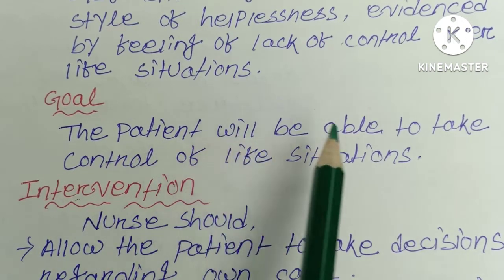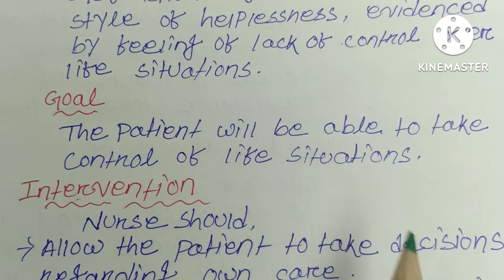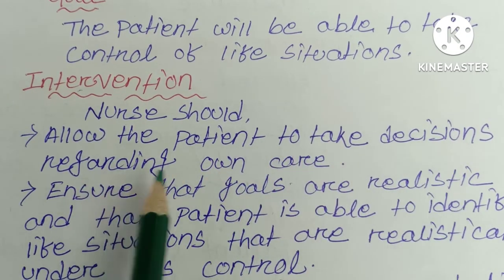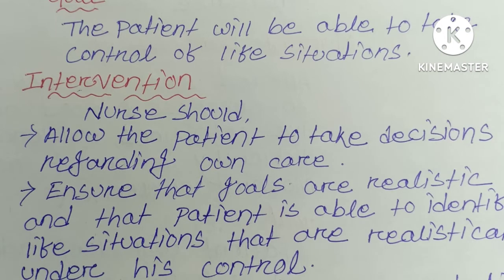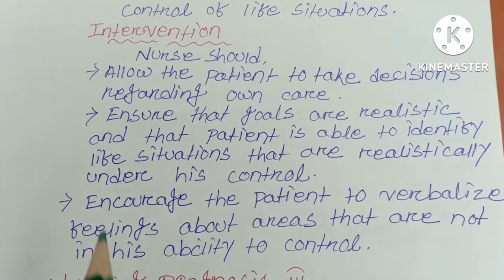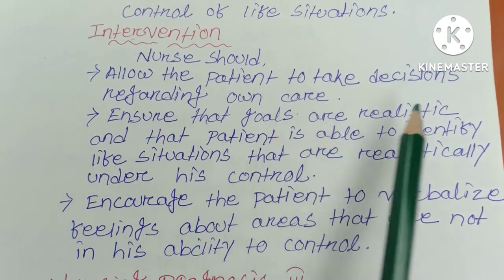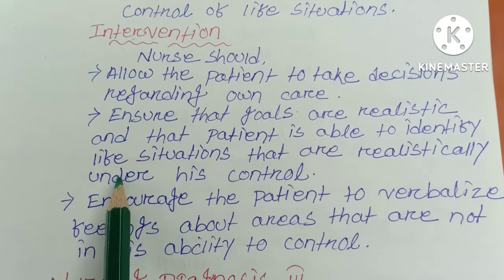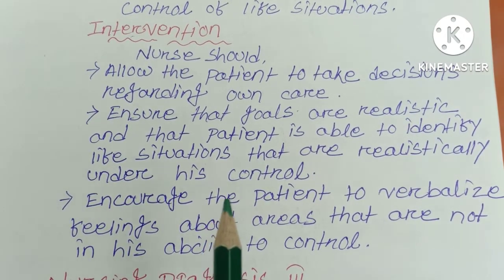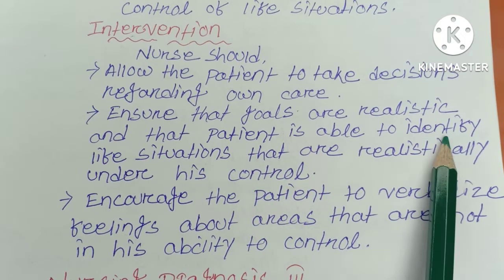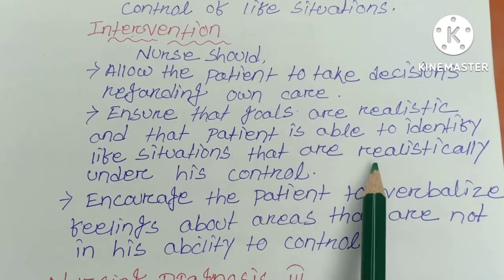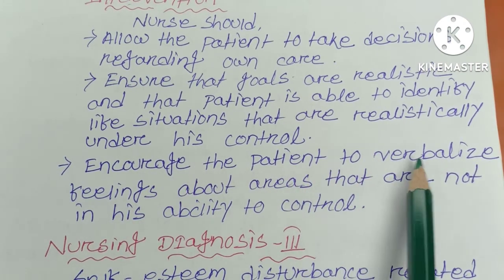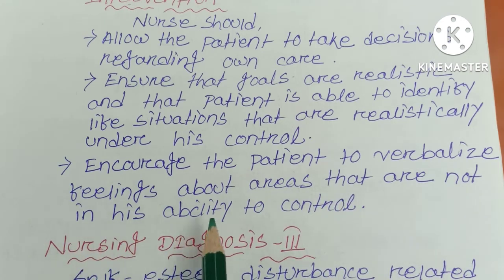The goal is that the patient will be able to take control of life situations. Interventions include: the nurse should allow the patient to take decisions regarding their own care. The nurse should ensure that goals are realistic and that the patient is able to identify life situations that are realistically under their control. Every day, the nurse should encourage the patient to verbalize feelings about areas that are not in their ability to control.